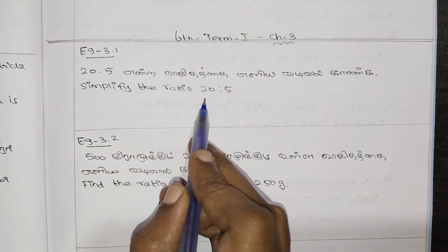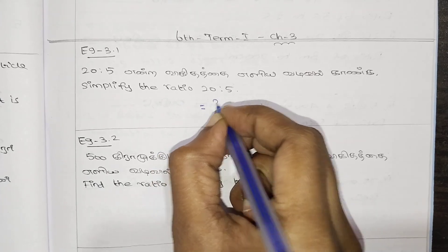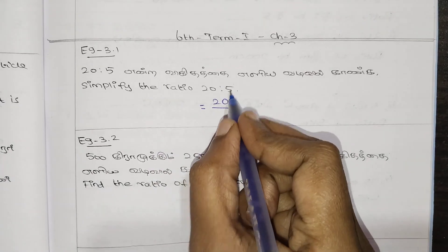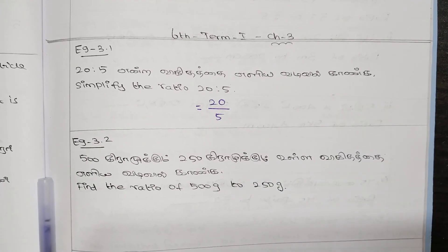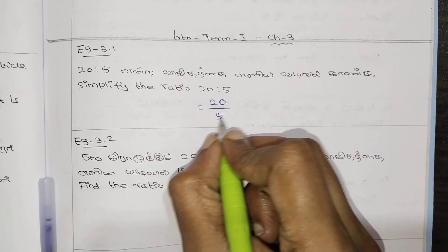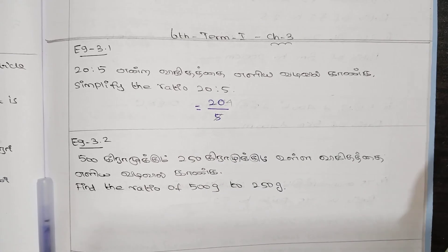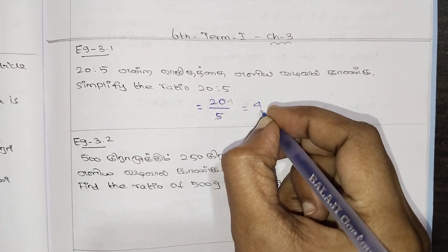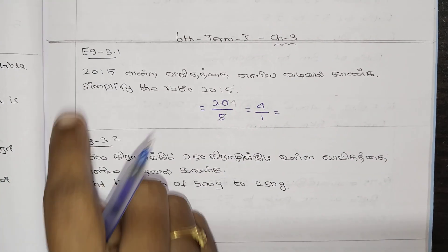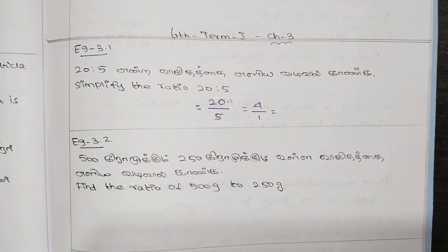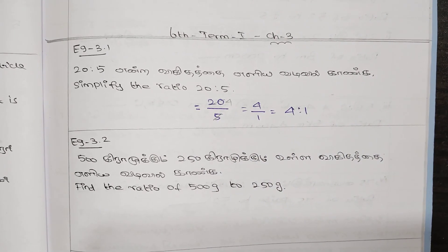Simplify the ratio 20 is to 5. We will simplify this. Let's cancel — 5 goes into 20 four times (4 fives are 20). So the answer is 4 is to 1. This is how we simplify by cancelling the same common factor.